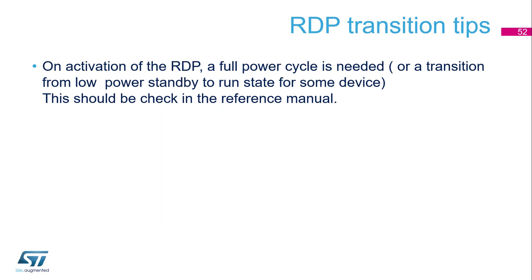A first tip: at support level, many requests are received saying 'I moved to RDP level 1 and now my code is not running.' On activation of RDP, a full power cycle is needed. Sometimes a transition from low-power or standby to run state is enough, but this should be checked in the reference manual. Keep this in mind when designing your board — for example, a soldered battery could make a full power cycle difficult.